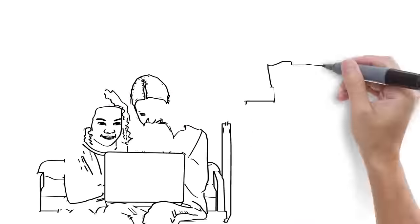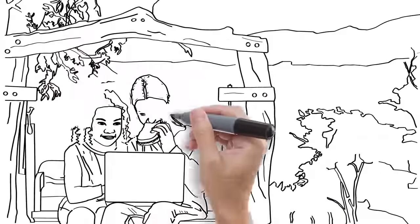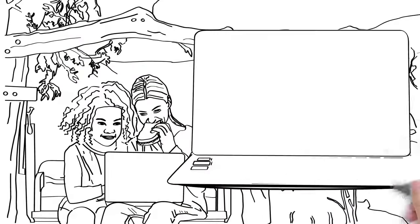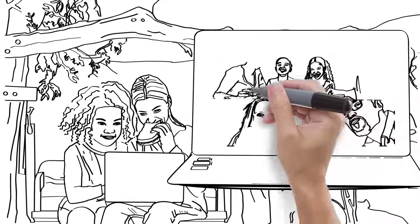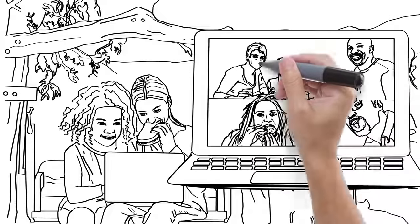At lunchtime, Maya and her mom sit on the back porch with peanut butter and jelly sandwiches. On the laptop, other families are on screen for a lunch bunch meeting, chatting and telling jokes.